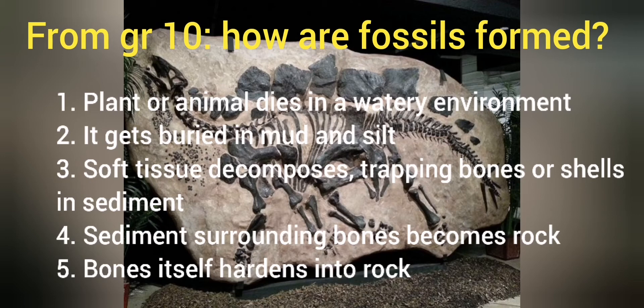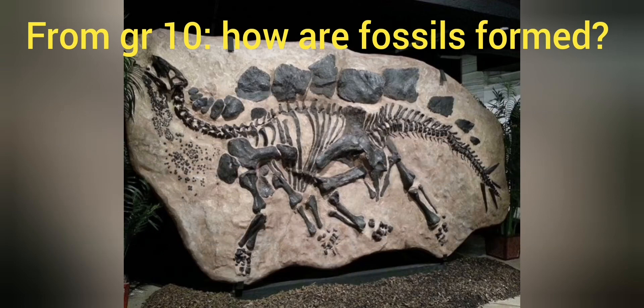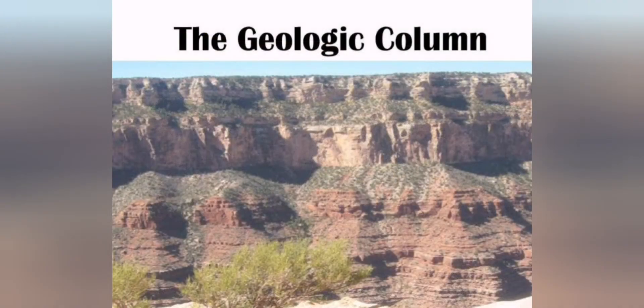Eventually the skeleton itself will also become rock, which is called fossilization. When we find this fossilized skeleton, it gives us an idea of what the animal or plant looked like and even when it existed. The fossil record is found inside what we call the geological column — layers of rock in which the fossils are trapped. You can do a simple experiment at home to show how these various layers in the geological column formed.